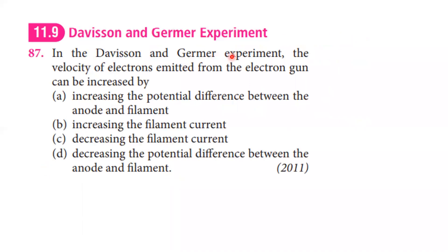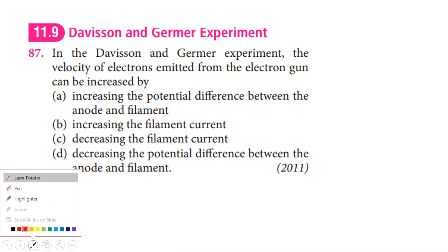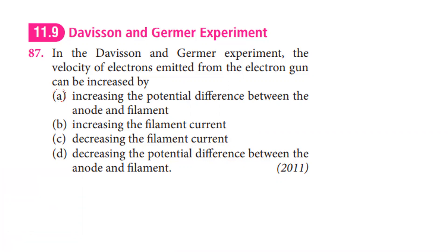In the Davisson and Germer experiment, the velocity of electrons emitted from the electron gun can be increased by increasing the accelerating potential. When the accelerating voltage increases, the kinetic energy increases, and therefore the velocity increases. The answer is the first option.